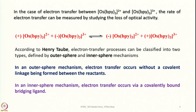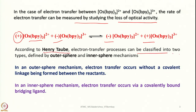In the case of electron transfer between tris-bipyridine osmium 2+ and 3+ complexes, since both are optically active, the rate of electron transfer can be measured by studying the loss of optical activity. Once we mix these two, optical activity changes — loss in optical activity can give a hint about the completeness of the electron transfer process. According to Henry Taube, electron transfer processes can be classified into two types: outer sphere mechanism and inner sphere mechanism.